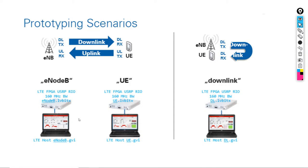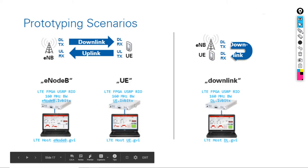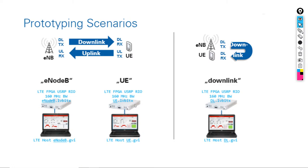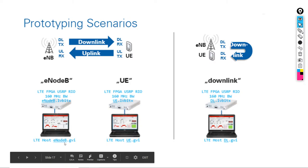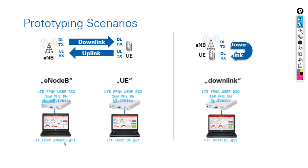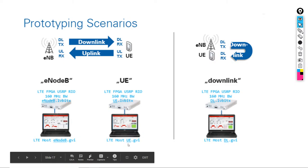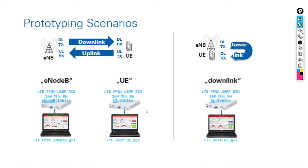For a prototyping scenario — how do you prototype your eNodeB and UE — you have two options. Option one: use two separate USRPs with two different PCs or laptops. One laptop runs the 3GPP eNodeB implementation software and the other runs the UE specification. You save them as files, run them on the computers, connect each with a USRP to transmit the signal live. The UE device receives the signal, decodes it, and communicates back to the eNodeB — this is the downlink and uplink scenario with two antennas.